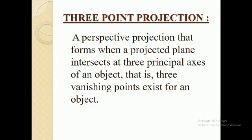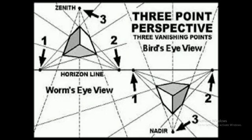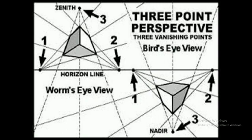Three-point projection forms when a projection plane intersects all three principal axes of an object — that is, three vanishing points exist for the object. In the diagram, you can see three vanishing points: first, second, and third. This can be viewed from a worm's eye view, looking upward, or from a bird's eye view, looking downward. These are the types of projections and their subtypes. This is the end of our video, thank you.